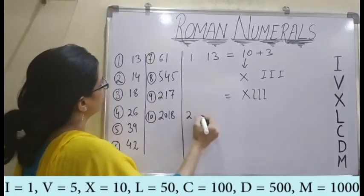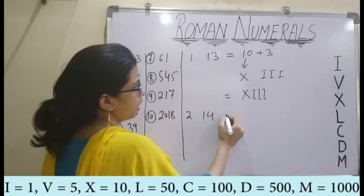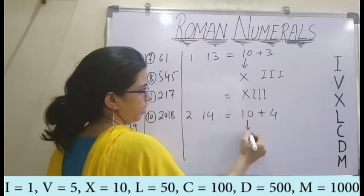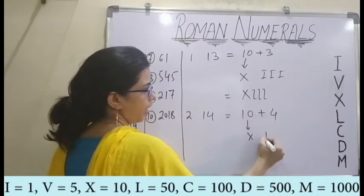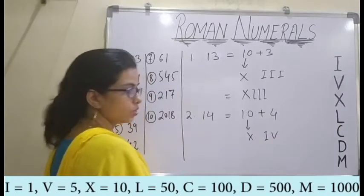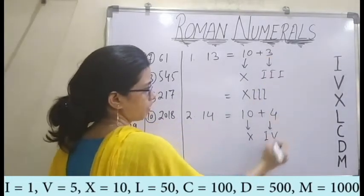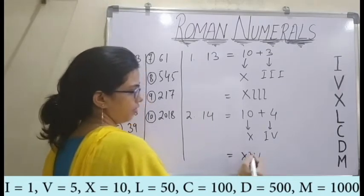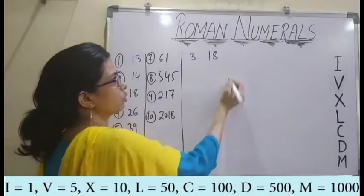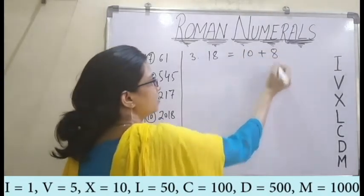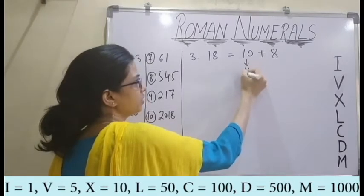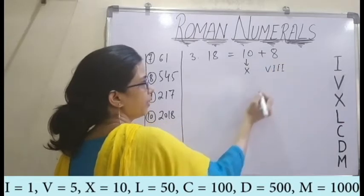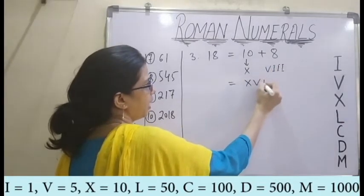Similarly, for the second one which is 14: it will be 10 plus 4. For 10 we have X, and for 4 we have IV. So my number is XIV. Third question is 18. We write that as 10 plus 8. For 10 I have X, and for 8 I have VIII. So my number is XVIII.